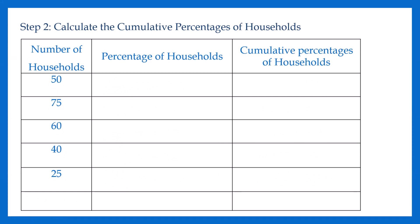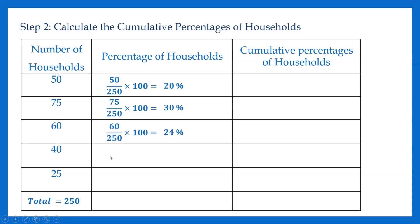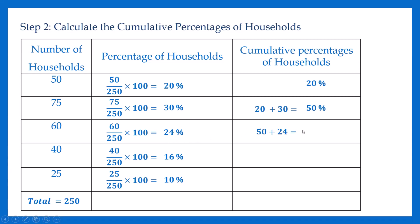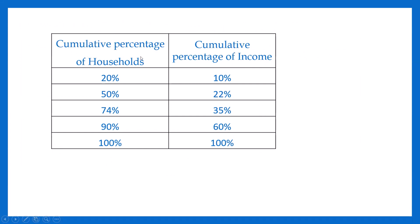In the second step, you should calculate the cumulative percentage of households. Here are the number of households. You can calculate the total number of households, then calculate the percentages. For example, 50 divided by 250 into 100 is 20%. You can calculate the percentages for all households similarly and then compute the cumulative percentage of households and the cumulative percentage of incomes.